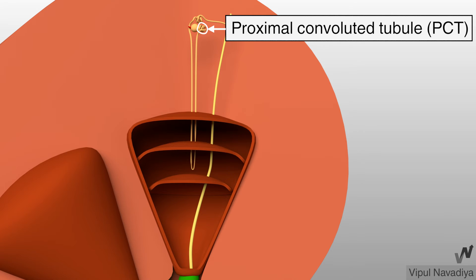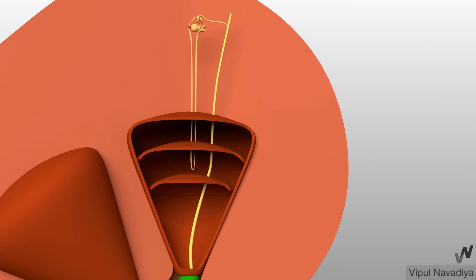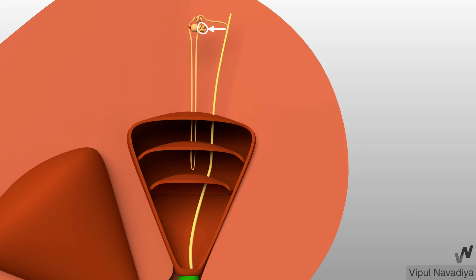The proximal tubule is further divided into proximal convoluted tubule and proximal straight tubule. As the name suggests, the proximal convoluted tubule has convolutions and the proximal straight tubule is straight. The convoluted part lies entirely in the cortex, while the straight part goes deep into the outer stripe of the outer medulla. Microvilli and mitochondria are abundant in the proximal tubule.